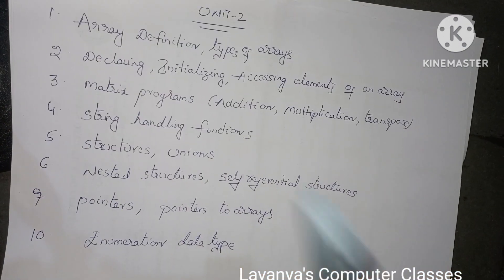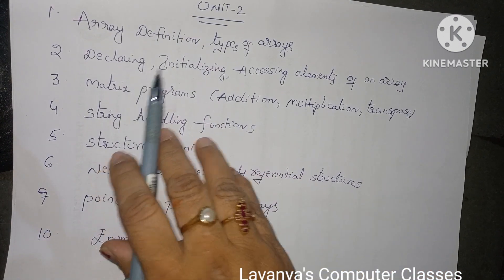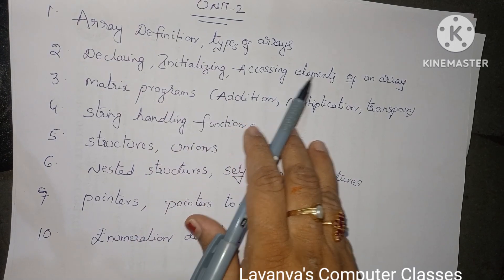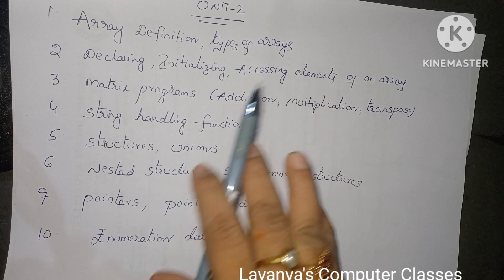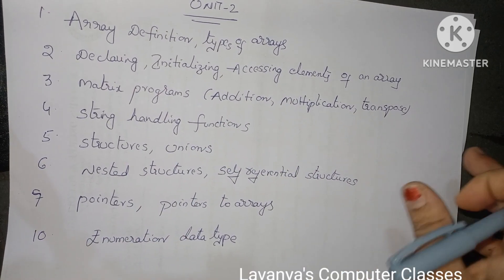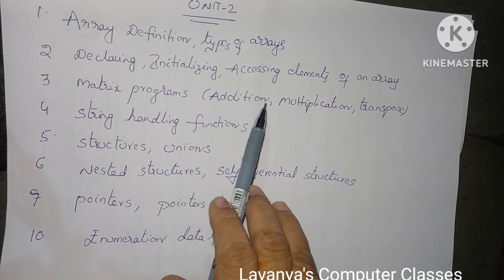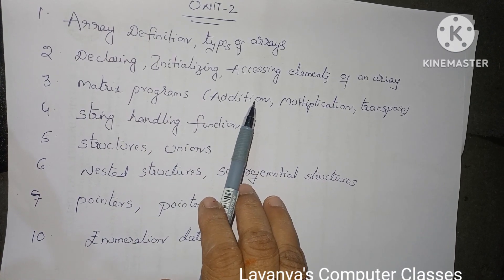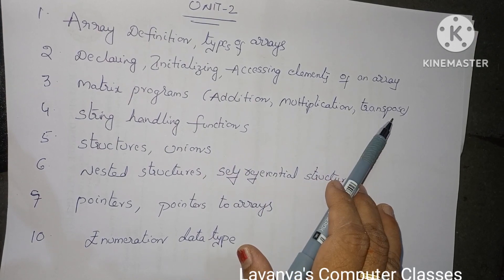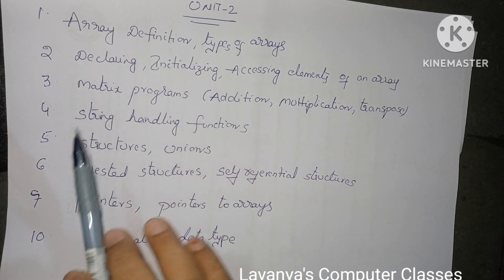Next question: how to declare and initialize an array, how to initialize the elements of an array, and how to access the elements of an array — explained with an example program. Important matrix programs include addition of two matrices, multiplication of two matrices, and transpose of a matrix. These three are very important programs for arrays.